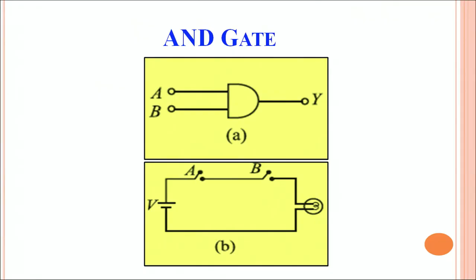The first figure shows the symbol of the AND gate. A and B are the inputs to the AND gate, and Y is the output. This symbol represents the AND gate. To realize the AND gate using switches, A and B are two switches representing the inputs, and the output is measured here.